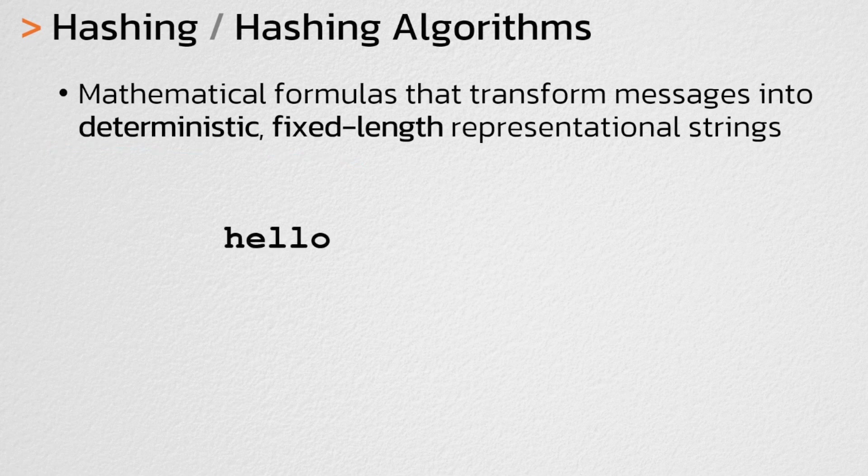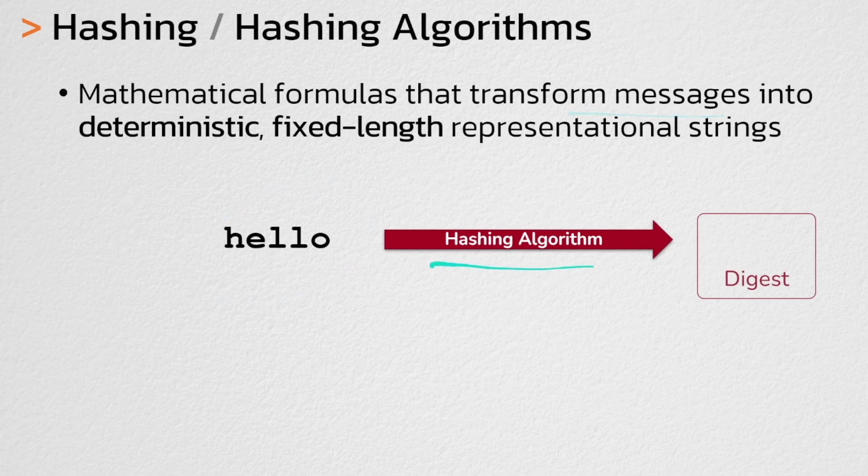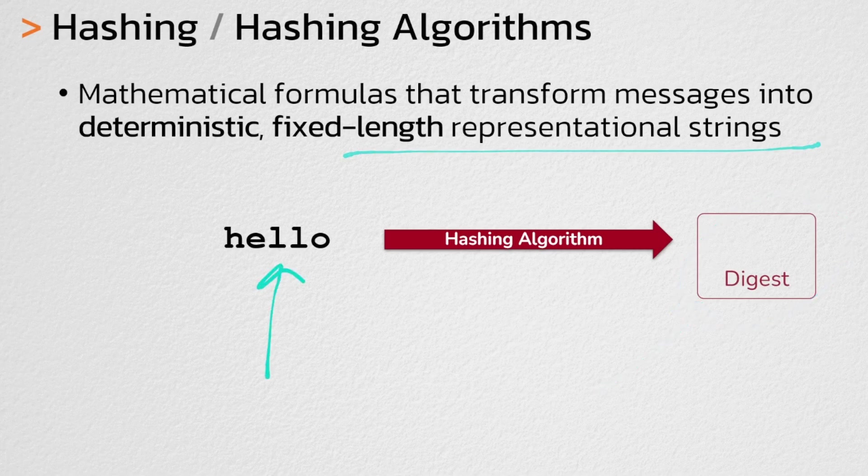For example, if we started with the word hello as our original message and we ran that through a hashing algorithm, the result of a hashing algorithm would be called the digest and this digest would be the representational string that represents the original message.